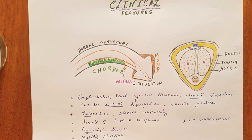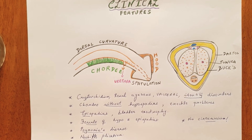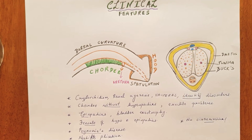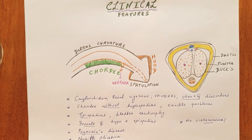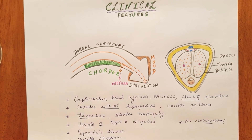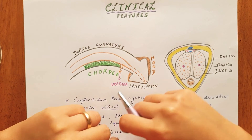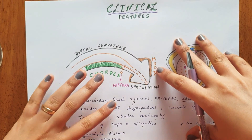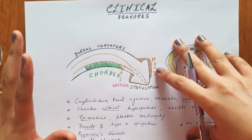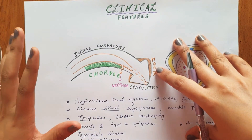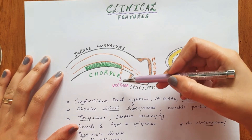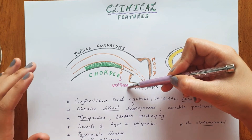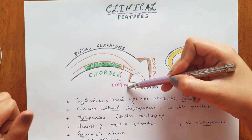Hello and welcome to my channel. I'm going to continue with the series on hypospadias, and in this video we'll discuss the clinical features. There are four main clinical features associated with hypospadias, the first being the abnormal urethral opening on the under surface of the penis.